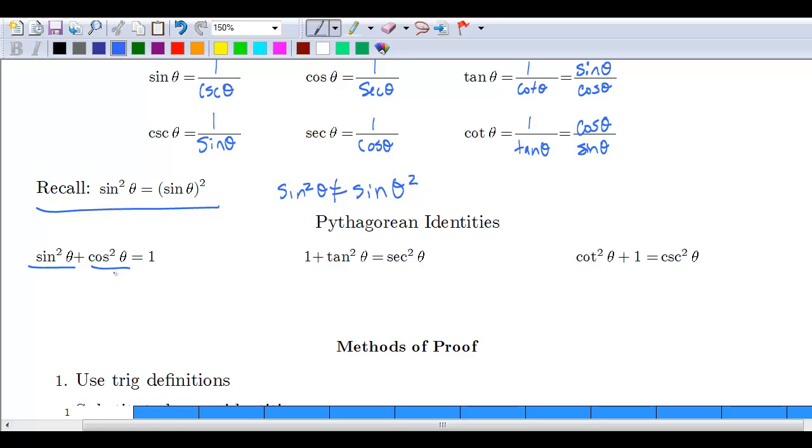If we divide this by cosine squared, you'll see sine squared divided by cosine—sine over cosine is tangent—that will give you tangent squared. Cosine squared divided by cosine squared is one, and one divided by cosine squared will give you secant squared.